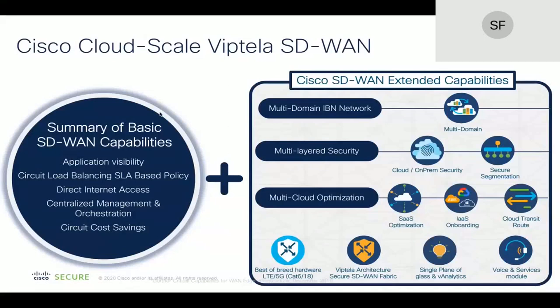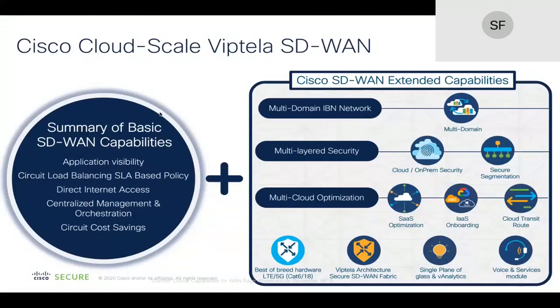Finally, it comes to the multi-domain area — how do you have seamless connectivity between your LAN site and data center, and push policies and telemetry between them? Cisco is well-positioned because we have an SDA solution for the campus environment, SD-WAN on the WAN side, and ACI on the data center side. We can integrate these three components with a single pane of glass to monitor and manage end-to-end for the customer.